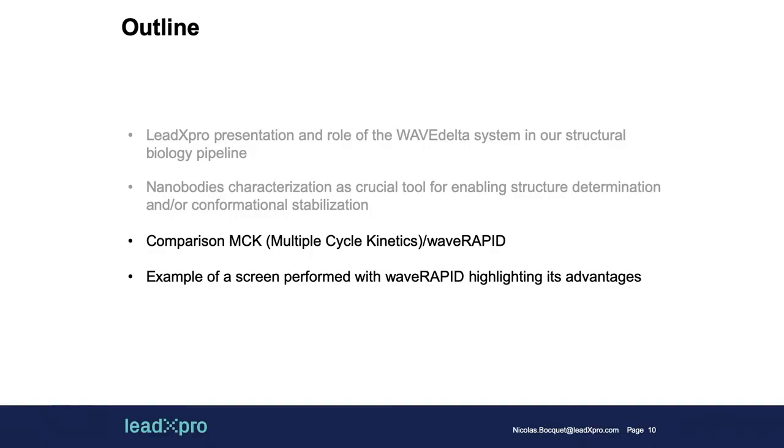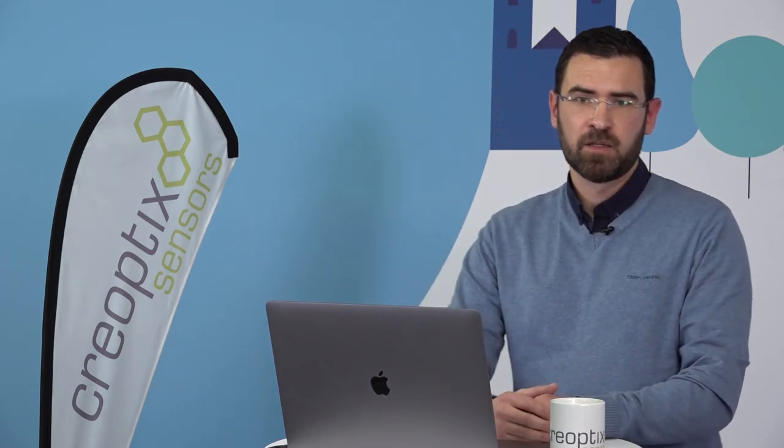Now we'll switch to the WaveRapid technique. When it came up, we started to use it in September. First, what we wanted to do is compare it with MCK — multiple cycle kinetics — which was the classical way we were recording data. We wanted to compare that to the WaveRapid to see if the data would be in good agreement. And then I will finish the presentation with an example of a screen we performed on a GPCR with 42 peptides.